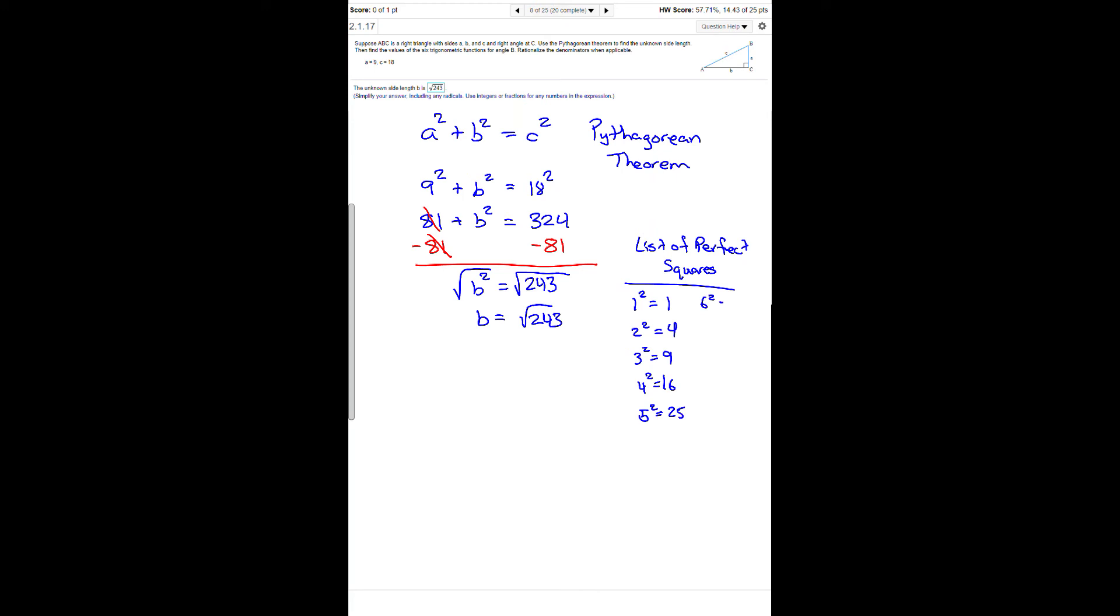6 squared is 36, 7 squared is 49, 8 squared is 64, 9 squared is 81, and 10 squared equals 100.